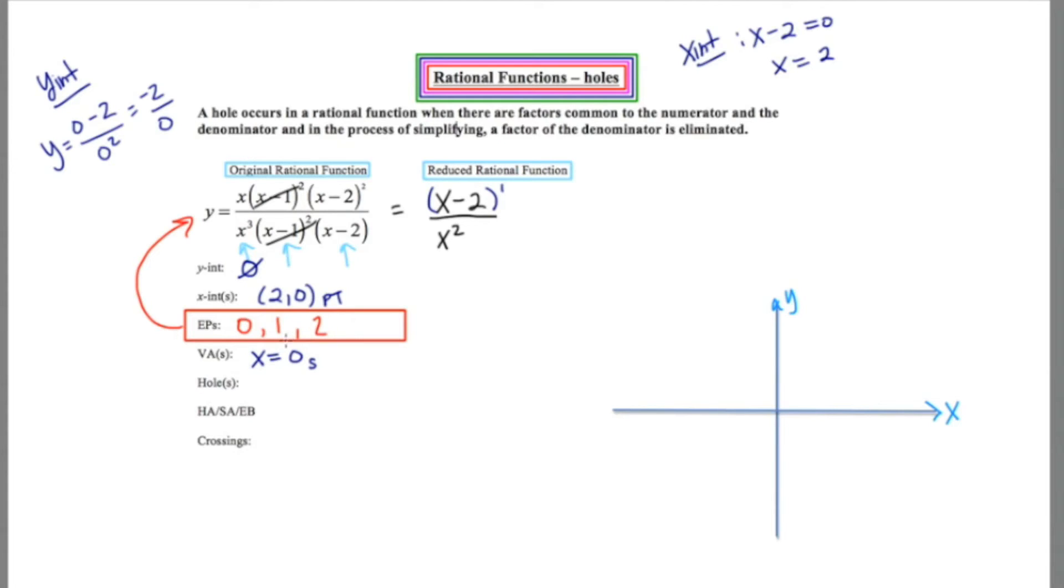Now, all excluded points must be accounted for. They either become VAs or they become holes, one or the other. Well, we got the VA taken care of, so there's two left. And that is the number one, which is going to be a hole. But there's another one, two.